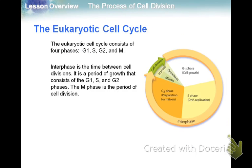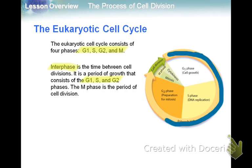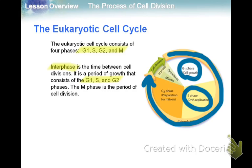The eukaryotic cell cycle is a little bit more complicated. There are four phases: G1, S, G2, and M. Interphase is the time between cell divisions, and that is made up of the three phases — G1, S, and G2. So all of that is part of interphase, which is the vast majority of the cell cycle.